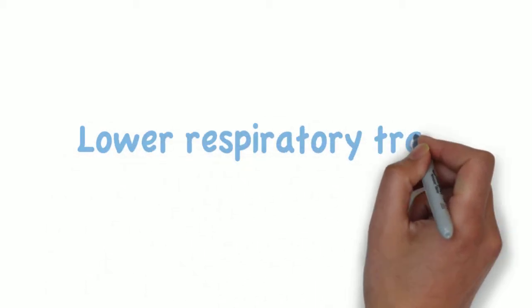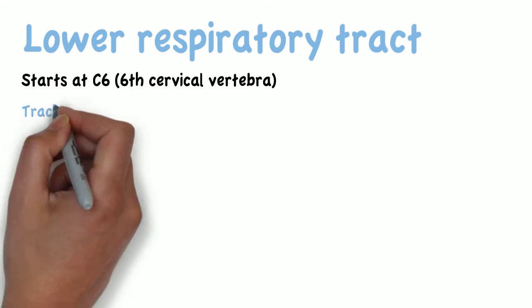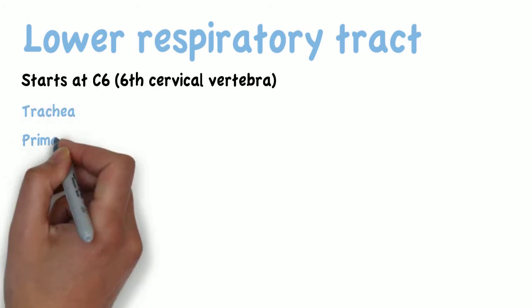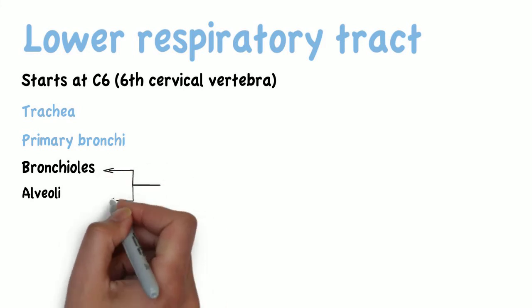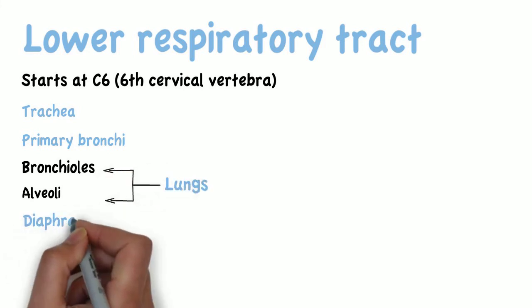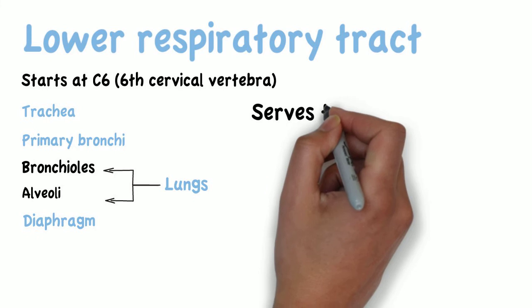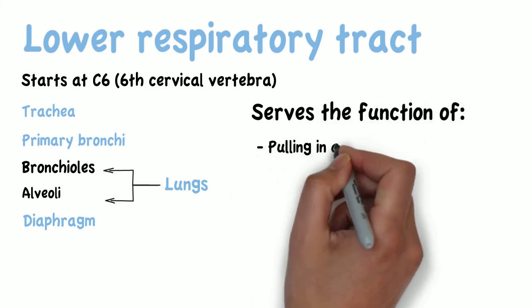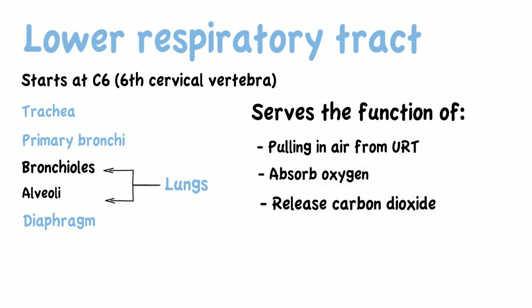The lower respiratory tract starts at the level of C6 and comprises the trachea, the primary bronchi, the bronchioles and alveoli, which make up the lungs, and the diaphragm. The lower respiratory tract serves the function of pulling in air from the upper respiratory tract, absorbing oxygen and releasing carbon dioxide in exchange.